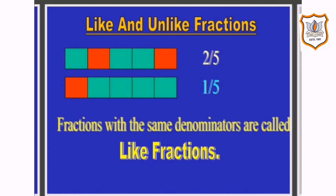Now, what are like and unlike fractions? Like fractions are those fractions, as the name suggests, that are alike or same. For example, two by five and one by five, where in both cases the denominators are the same. So fractions with the same denominators are called like fractions.